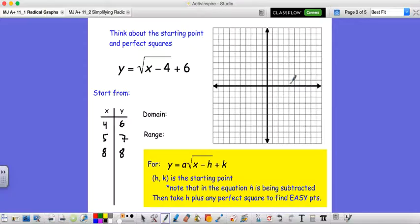So now let's plot this. (4,6), and then up to (5,7), then we have (8,8). So our graph is going to start here and curve up like that.